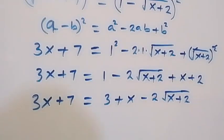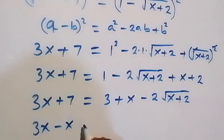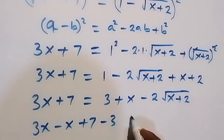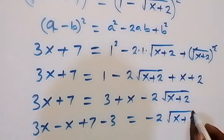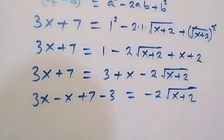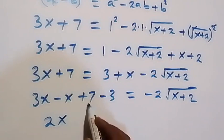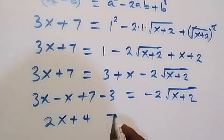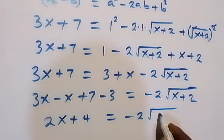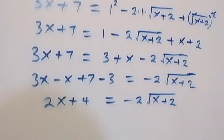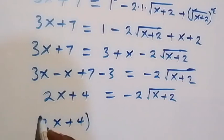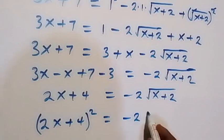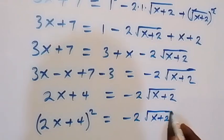From here, let's take the 3 and x to the left side, so this becomes 3x minus x plus 7 minus 3, which equals negative 2 times square root of x plus 2. Then let's square both sides of this again: 2x plus 4, all squared, equals negative 2 times square root of x plus 2, all squared.